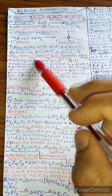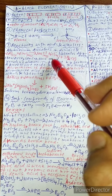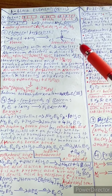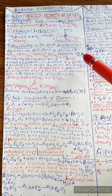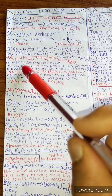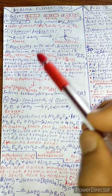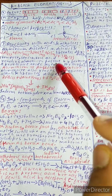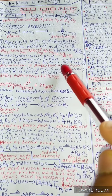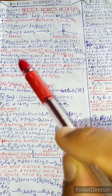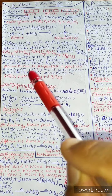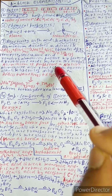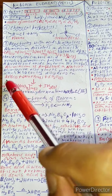Reactivity with acids and alkalis: aluminium dissolves in dilute HCl and liberates dihydrogen. The reaction is: 2Al(s) + 6HCl(aq) → 2Al³⁺(aq) + 6Cl⁻(aq) + 3H₂(g). However, concentrated nitric acid renders aluminium passive by forming a protective oxide layer on the surface. Aluminium is amphoteric in nature.